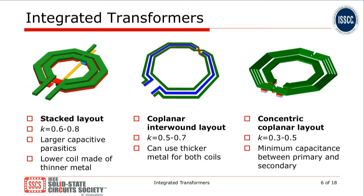A transformer is nothing but two coupled inductors. We can implement that in integrated form, leveraging several different layout options. The first one is the stacked layout. With this option, we achieve a relatively large magnetic coupling, but we also suffer from a relatively large parasitic capacitance between the primary and the secondary windings. Moreover, with this layout option, it might happen that we have to implement the bottom coil with a thinner metal, which impairs its quality factor.